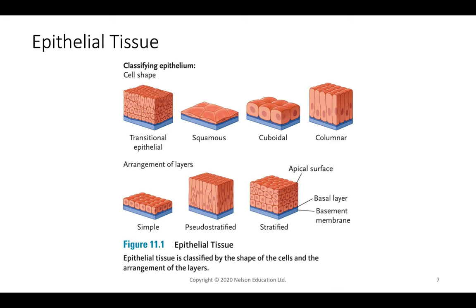Epithelial tissue is classified in two ways: by cell shape and by how the layers are arranged. Combining both gives us names like simple squamous, simple cuboidal, or pseudostratified columnar.